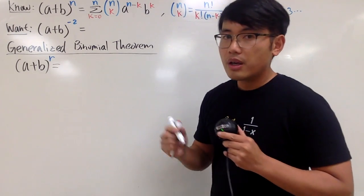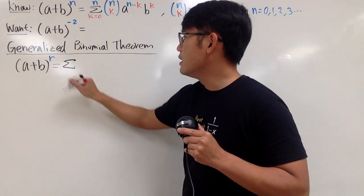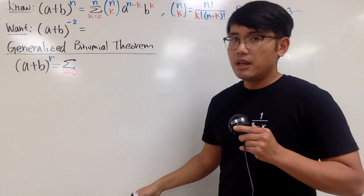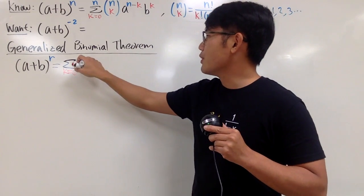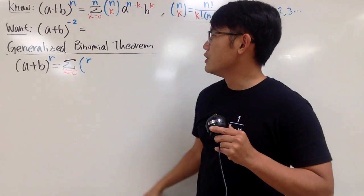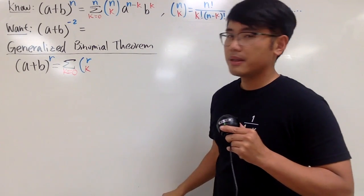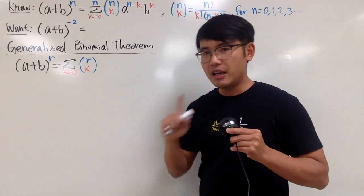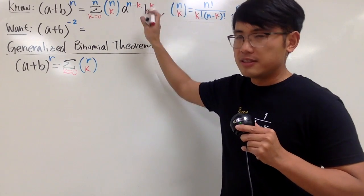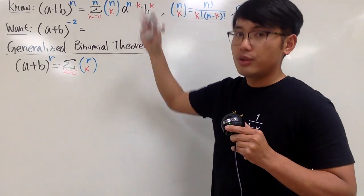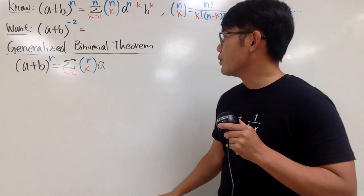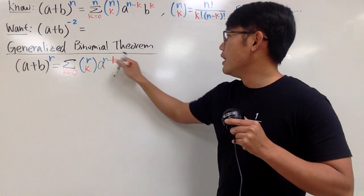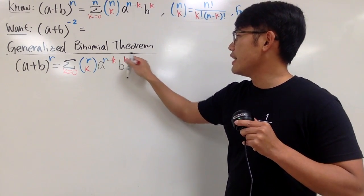This right here is equal to a sum, with k starting at 0, and we still have the coefficient — which this time will be r choose k — and then a to the (r minus k) power, multiplied by b to the k power.